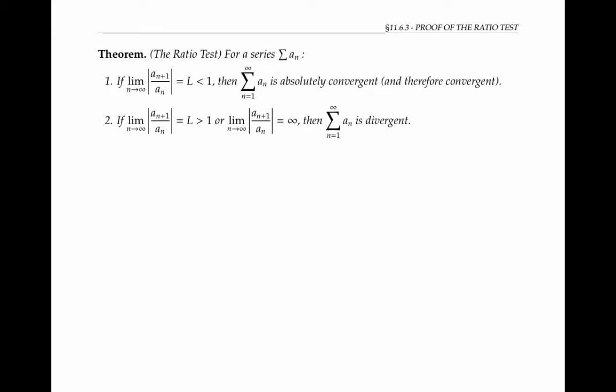If however, the limit of the absolute value of the ratio of consecutive terms is a number L that's bigger than one or is equal to infinity, then the series is divergent. If the limit is equal to one exactly, or if the limit doesn't exist, then the ratio test is inconclusive and can't be used to establish convergence or divergence.